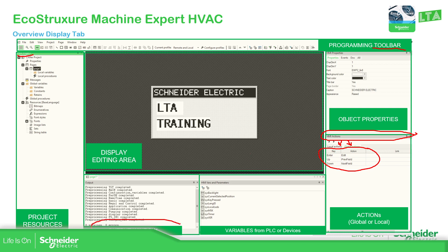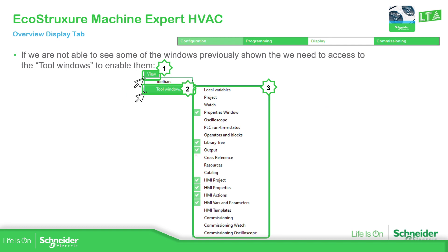As usual we have the output windows, which give us information about any errors. Then we have the variables from PLC devices, located here in HMI bars and parameters. Here you should be able to find all internal variables defined on the controller or the EPROM status variables. In case you are not able to see some of those objects, go to View, select Tool Windows, and then select what you want to show on the display.